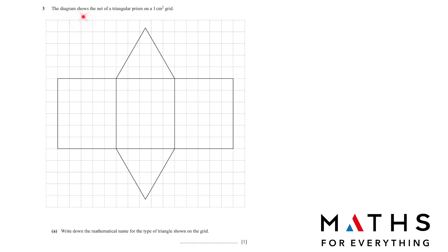Question number 3. The diagram shows the net of a triangular prism on a one square centimeter grid. Write down the mathematical name for the type of triangle shown on the grid. For that, let's count the number of squares. This is 1, 2, 3, 4, 5. 1, 2, 3, 4, 5. And this is 1, 2, 3, 4, 5. So all three sides are equal. It means it is an equilateral triangle.